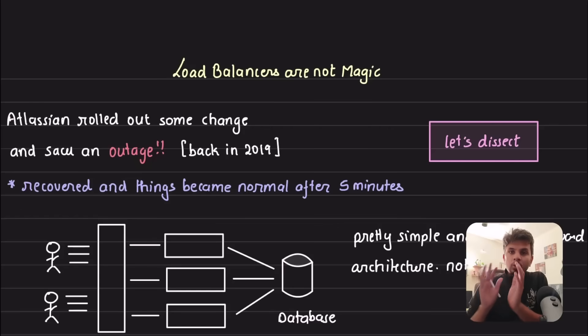The core essence of this outage happened because of load balancers and this tells us one thing - that load balancers are not magic. This is the exact title of their blog post as well which I will link in the iCard. Now let's start digging deeper into understanding what exactly happened.